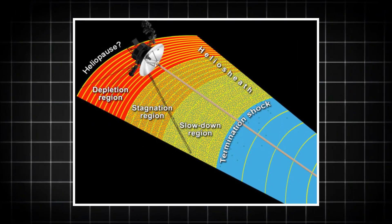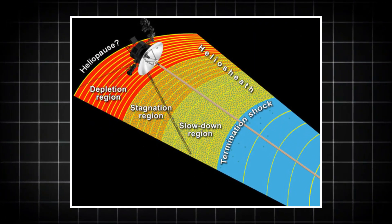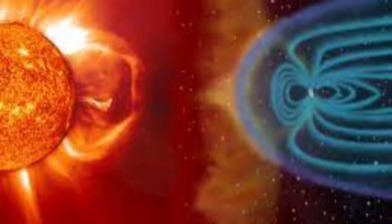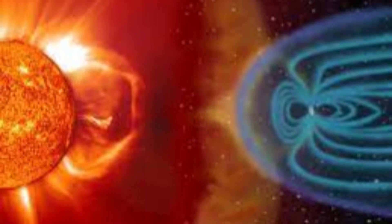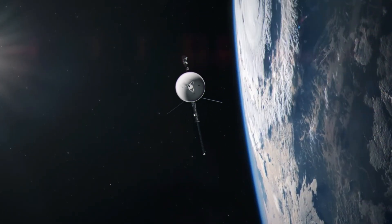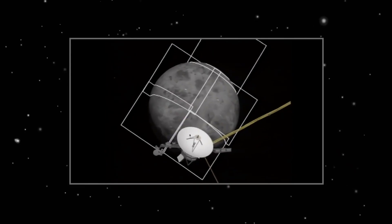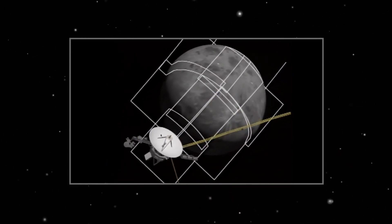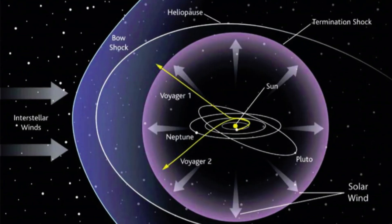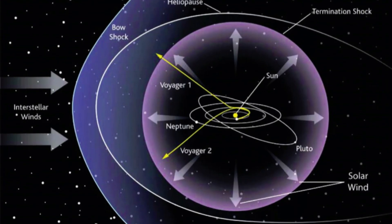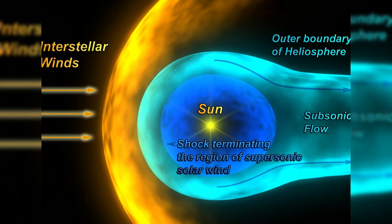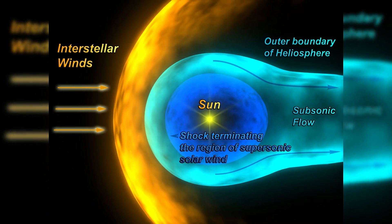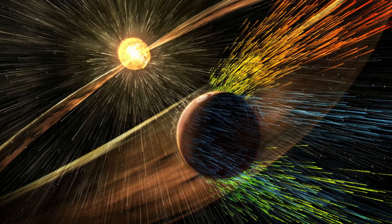The unprecedented data Voyager has sent back about the behavior of the heliopause, the boundary between the sun's protective bubble and interstellar space, is shaking up everything we thought we knew about space dynamics. For decades, scientists believed the heliopause, where the solar wind from the sun meets the interstellar medium, would be a smooth and well-understood boundary.